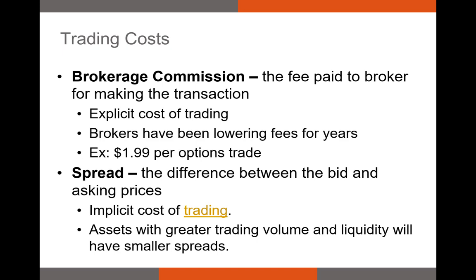The bid-ask spread is the other cost of trading, and this is what we typically call an implicit cost — it's a cost you might not see and it won't be as straightforward as your brokerage commission. The bid-ask spread is the difference between two numbers: the bid and the ask. Typically, we subtract the highest bid price from the lowest asking price, and that gives you your bid-ask spread.